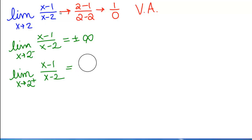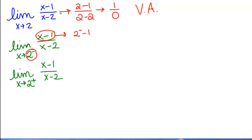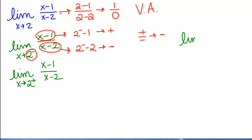We reason through it. For a number a little bit less than 2, subtracting 1 still gives a positive number since it's close to 2. But taking a number a little less than 2 and subtracting 2 means we've taken away more than we had, giving a negative number. A positive divided by a negative is negative. Since the answer must be negative and the only choices are positive or negative infinity, the left-side limit is negative infinity.